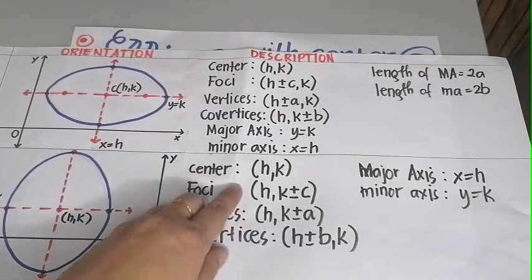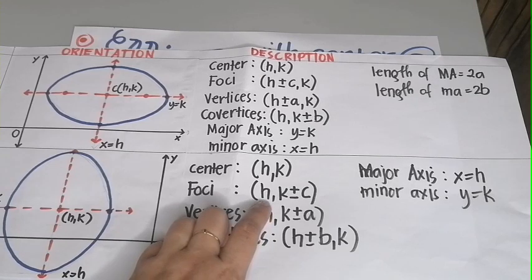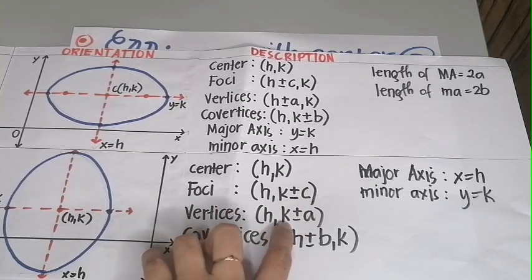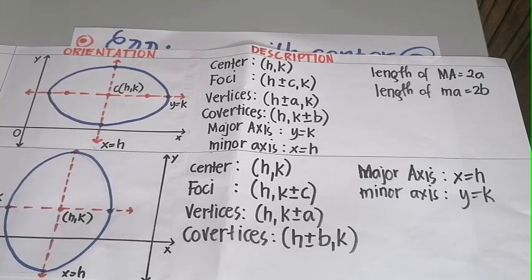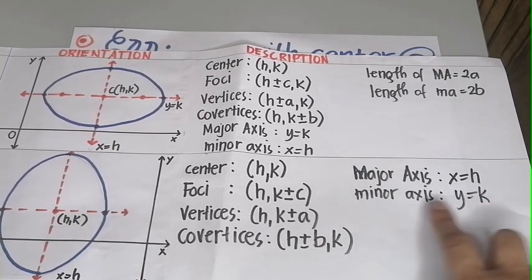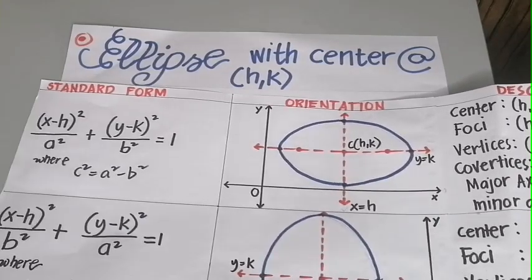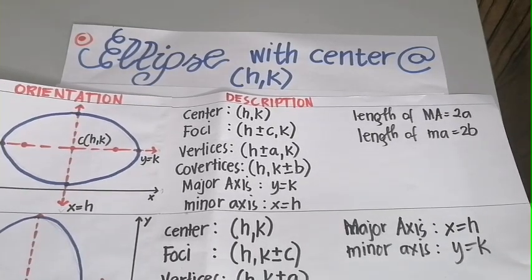The elements of this ellipse: the center is at HK. Foci are at h, k plus-minus c. Vertices are at h, k plus-minus a. Co-vertices are at h, k plus-minus b. The major axis is x equals h. Minor axis is y equals k. The length of the major axis and minor axis are 2a and 2b, respectively. These are the standard forms, their respective orientations and descriptions of the ellipse with center at HK.